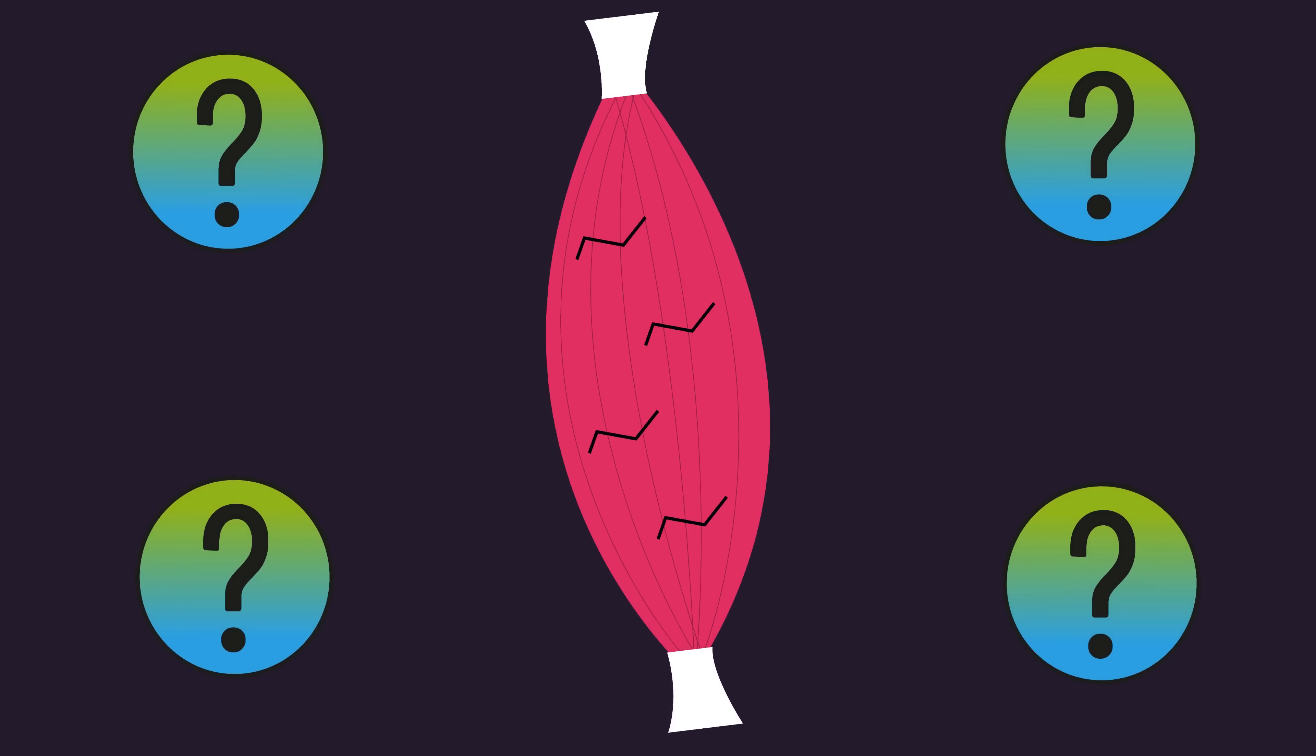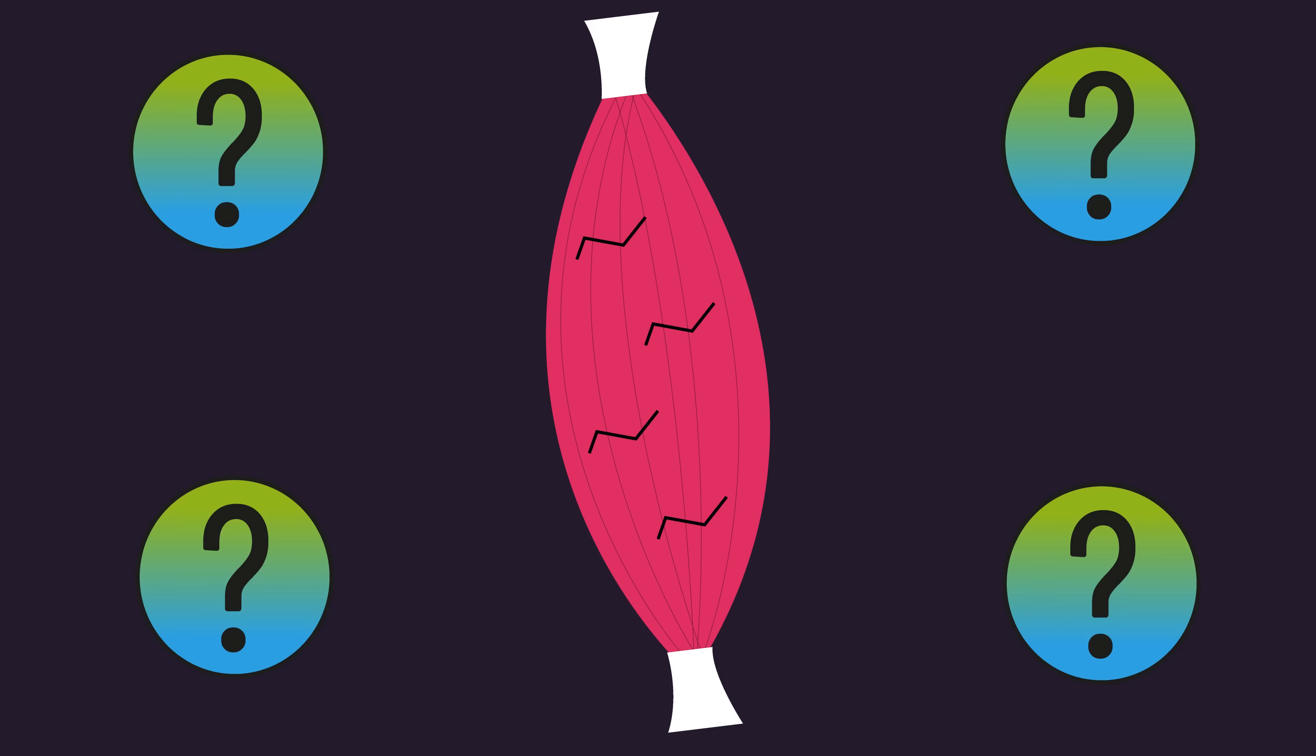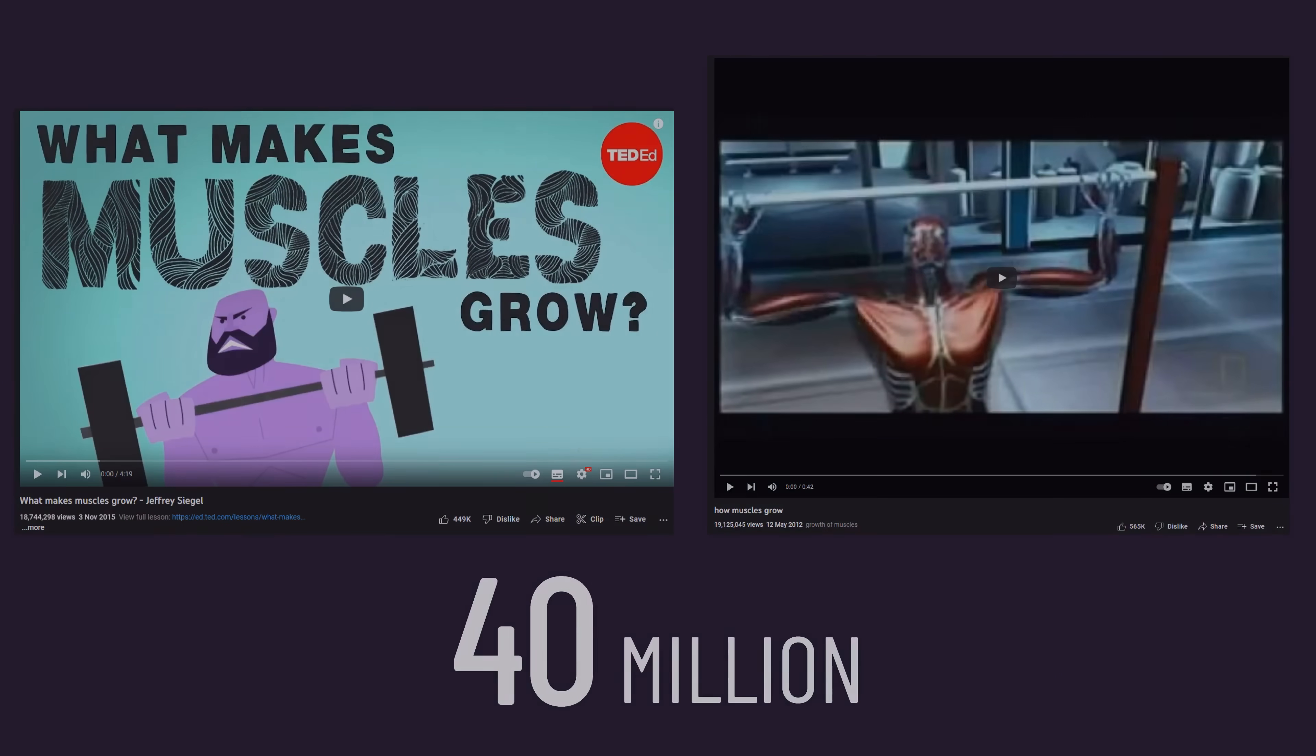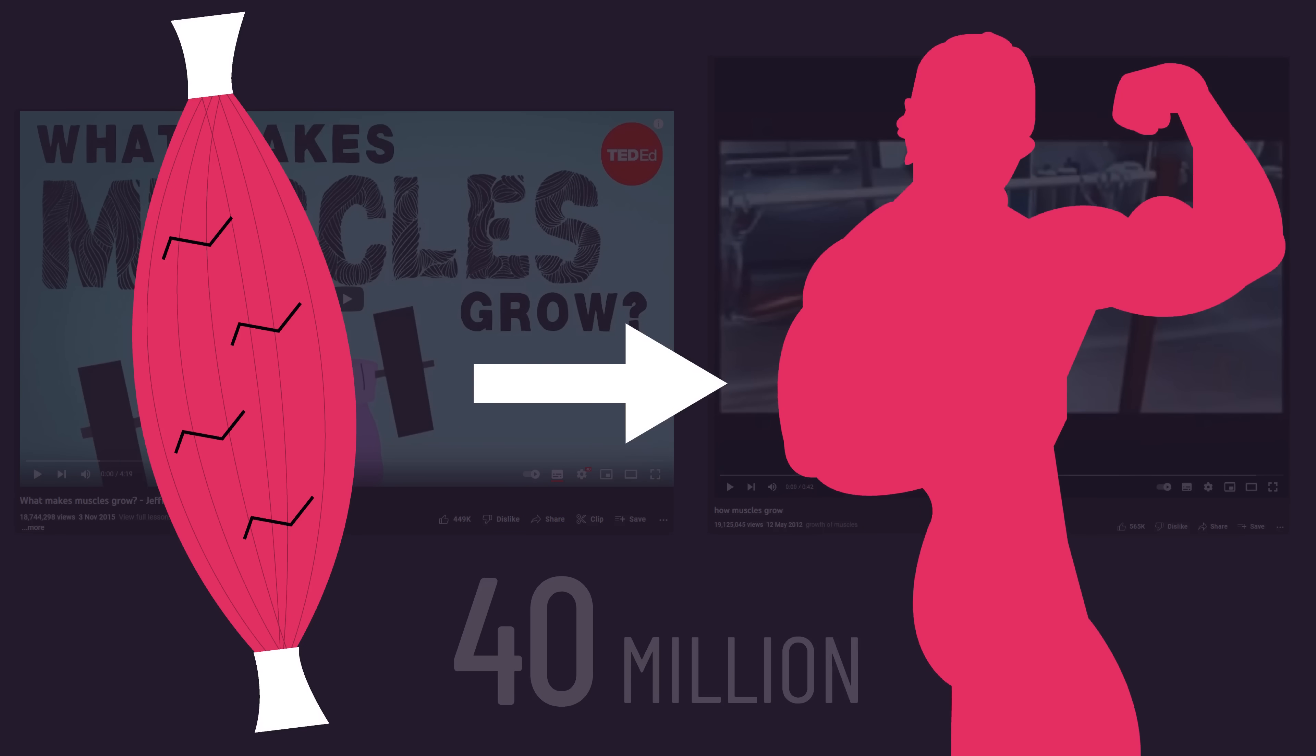How many times do you think you've heard this? Chances are, a lot. These two videos with a combined near 40 million views both suggest micro tears are the primary stimulus for muscle hypertrophy.